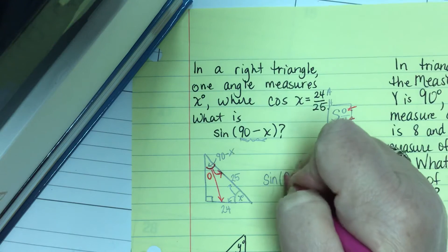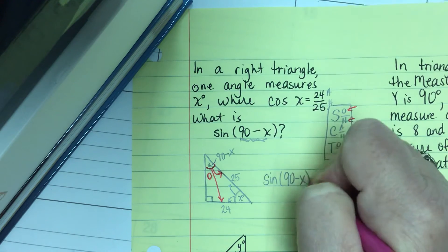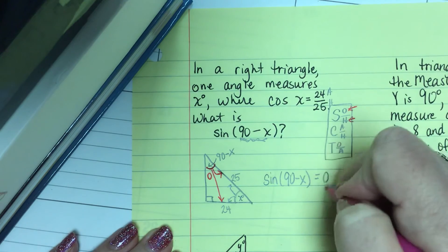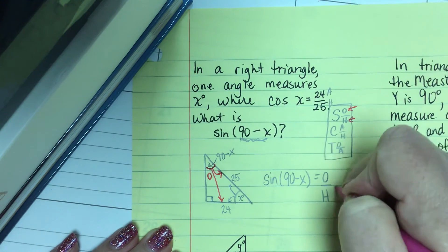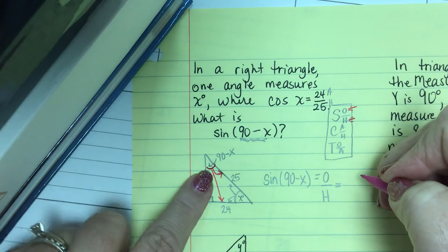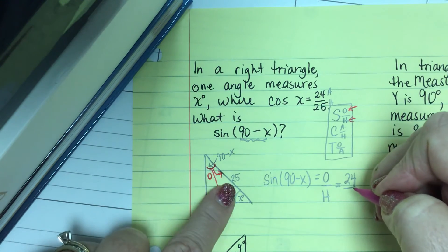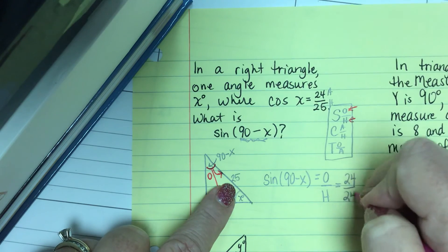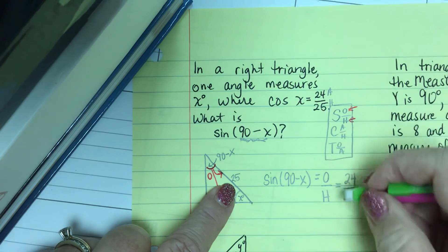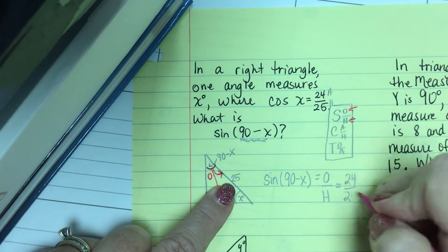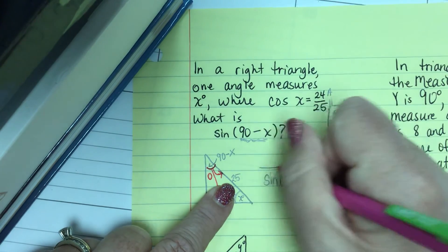And make sure you show your work for this. The sine of 90 minus x. And you're welcome to put opposite over hypotenuse. And then opposite, this is the measure of 24. And adjacent to this angle is the measure of 25. And I wrote 24. So my answer to this problem is 24 over 25.